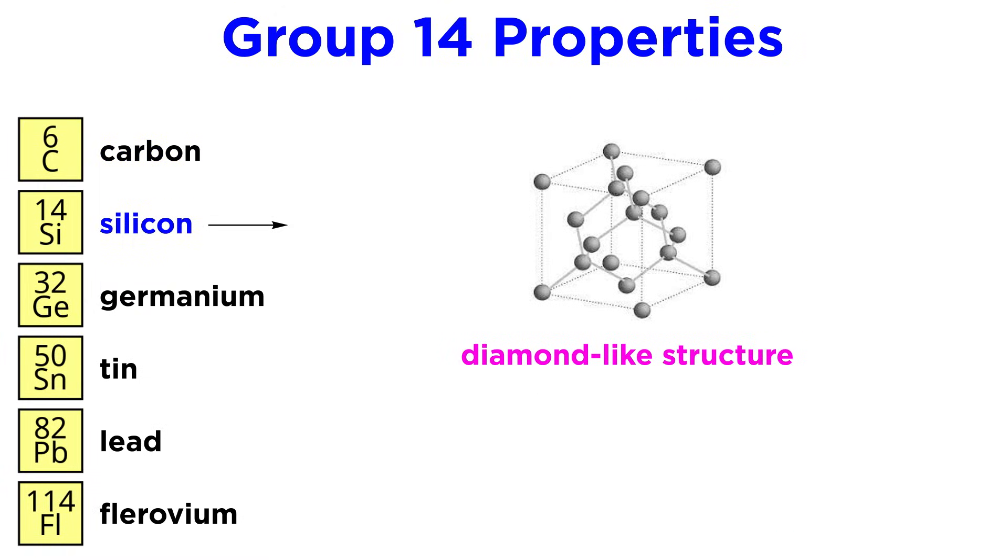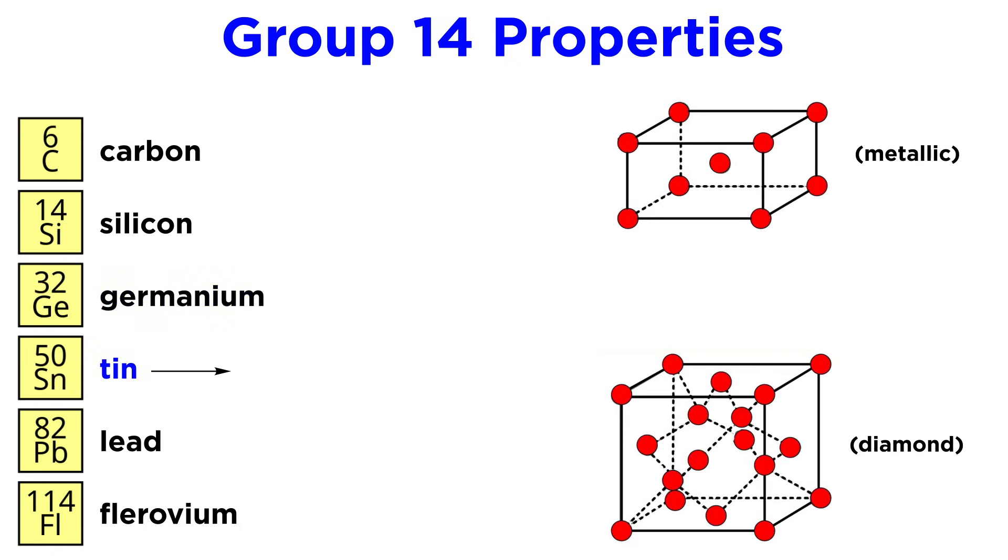Silicon also takes on a diamond-like structure and is a semiconductor due to the small band gap between its valence band and conduction band. Germanium also has a diamond-like structure, while tin has both metallic and diamond allotropes. The metallic is malleable and shiny, while the diamond is brittle and gray.